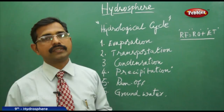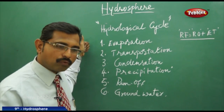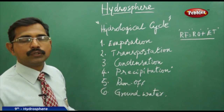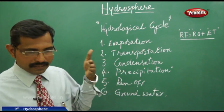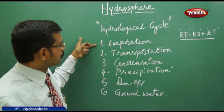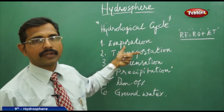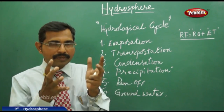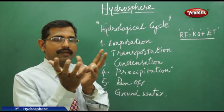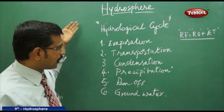Now we will discuss the six stages of the hydrological cycle. The first stage is evaporation — from water bodies like rivers, lakes, and oceans, water evaporates due to sunlight and rises into the atmosphere. The second stage is transportation, where the water particles form clouds and those clouds slowly move, transporting water from sea or river areas to other regions.